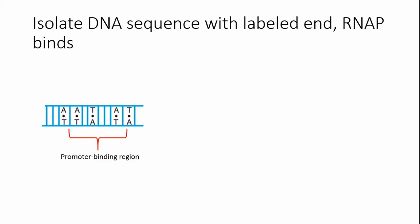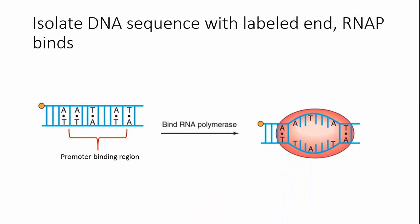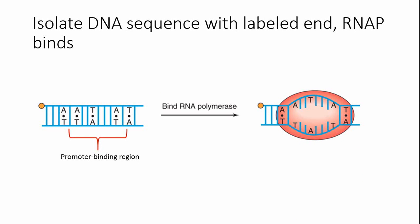After that, the DNA is labeled so that it can be detected by something like autoradiography after being run on a gel. In this example, the DNA sequence being used has been labeled on its 5' end, but a 3' end label is also perfectly acceptable to use. The results on a gel will just be laid out differently. RNA polymerase is then added, which will bind to the promoter binding region and melt that section of the DNA, forming an open complex.